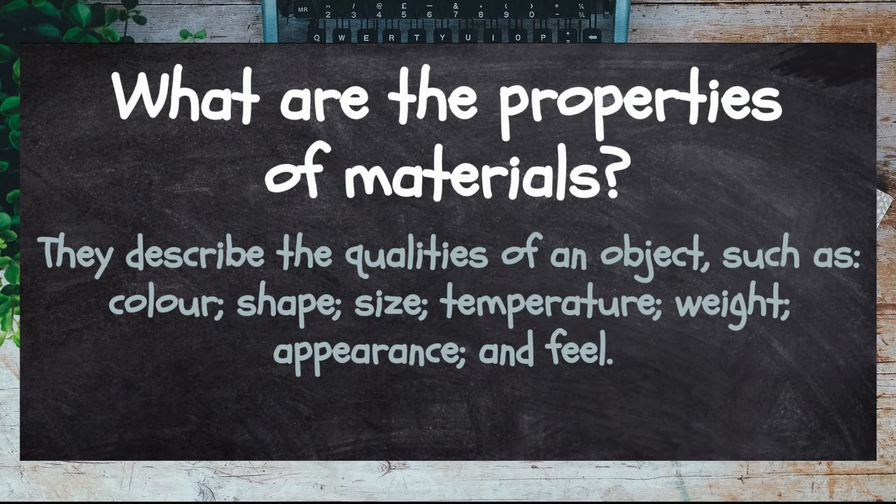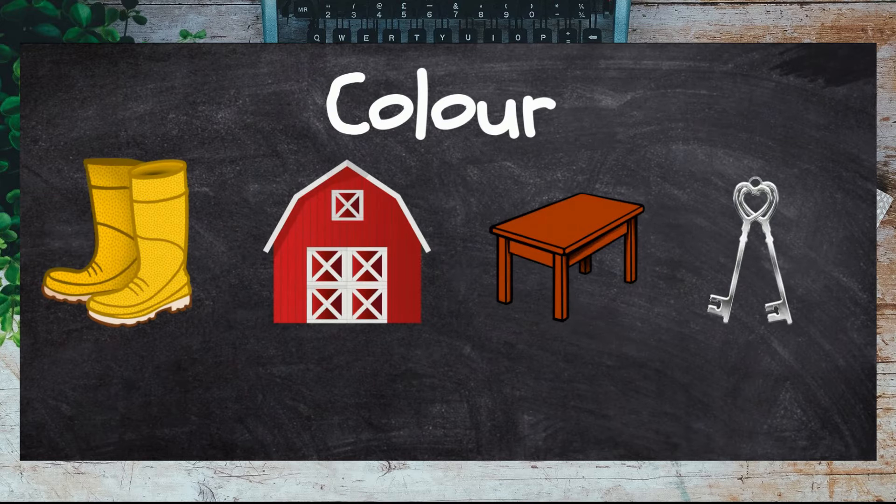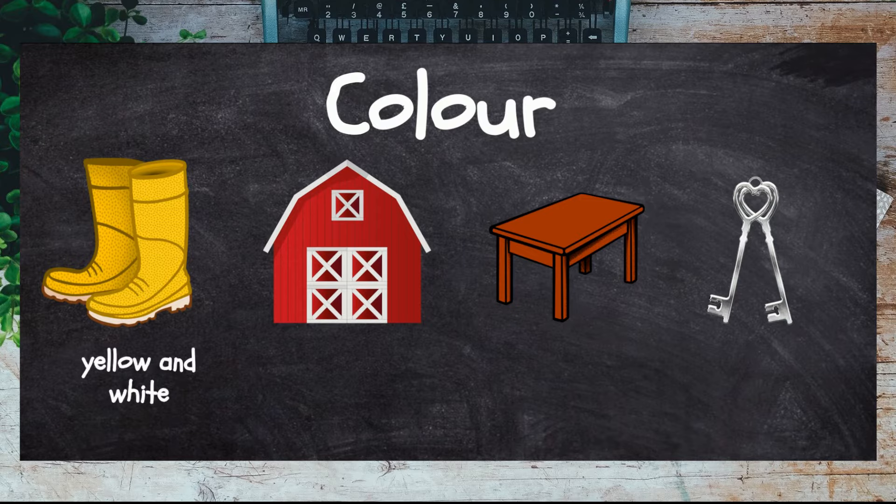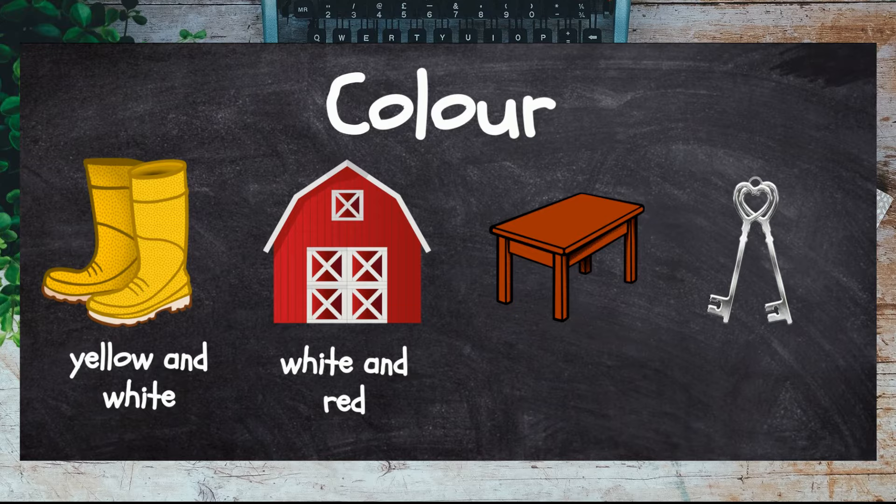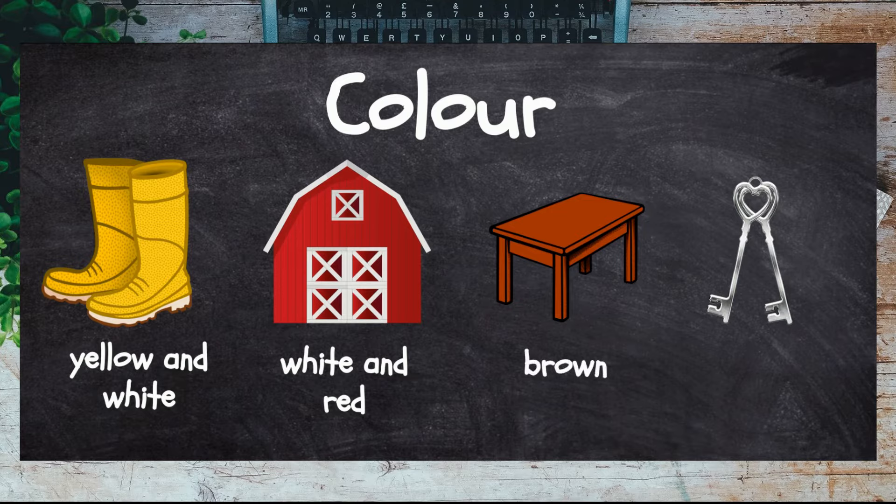Color: an object can be multiple colors, just like these yellow and white rubber boots or this white and red wooden barn. The color can also give us a clue as to what material it's made from, like this brown table made from wood or these silver keys made from metal.